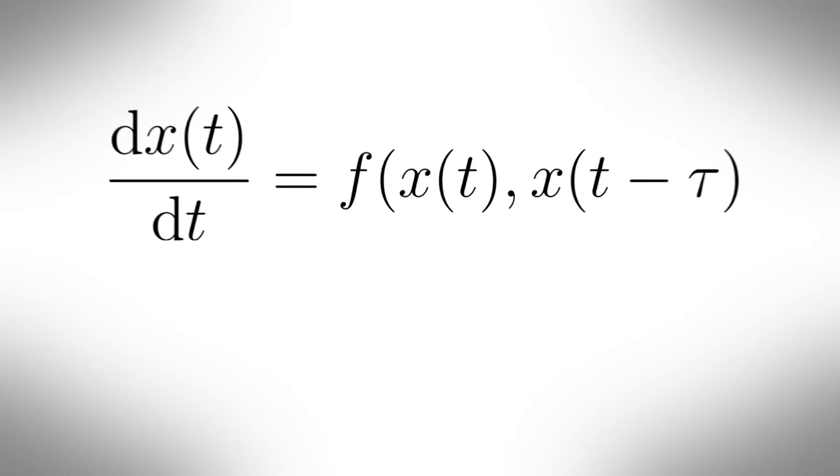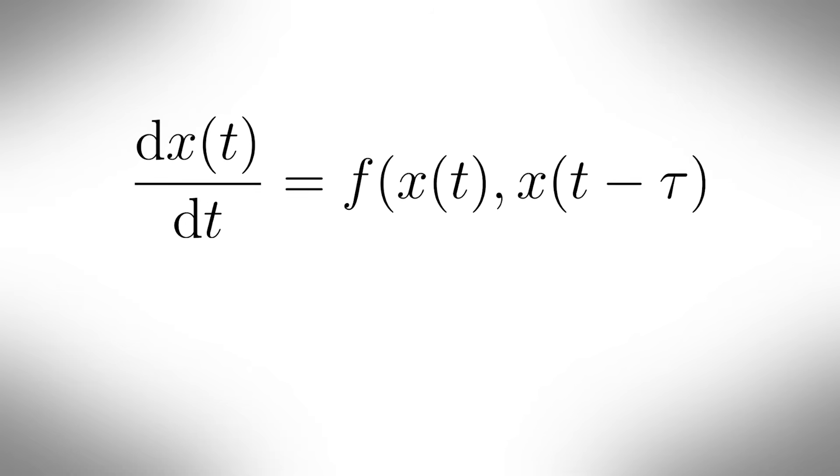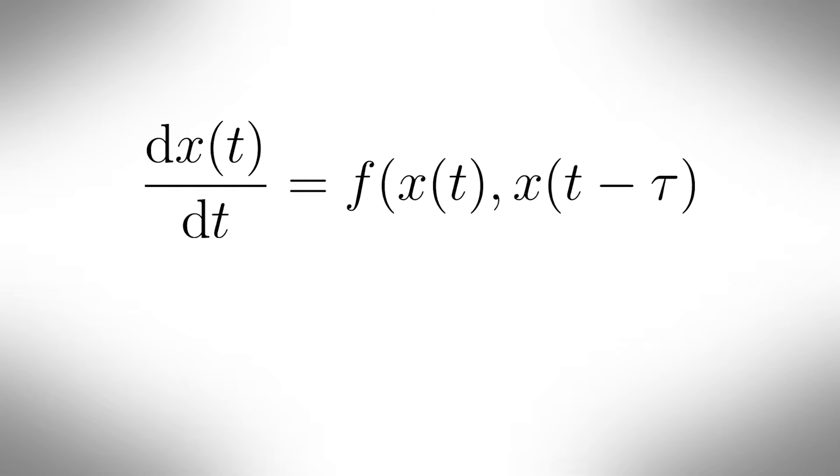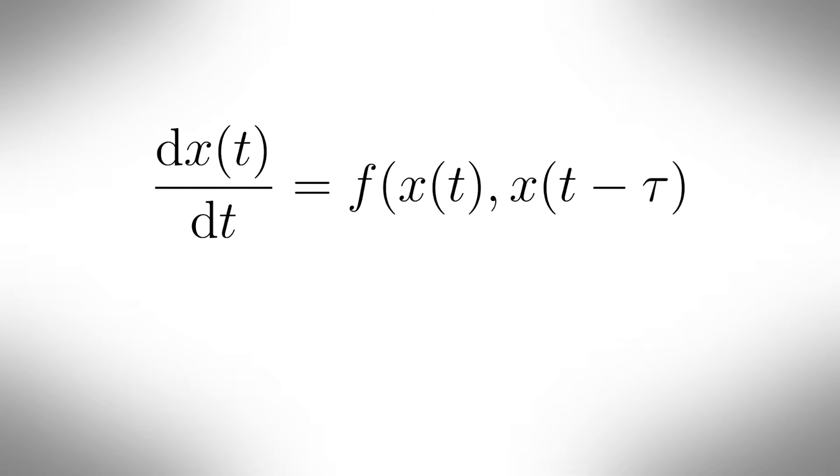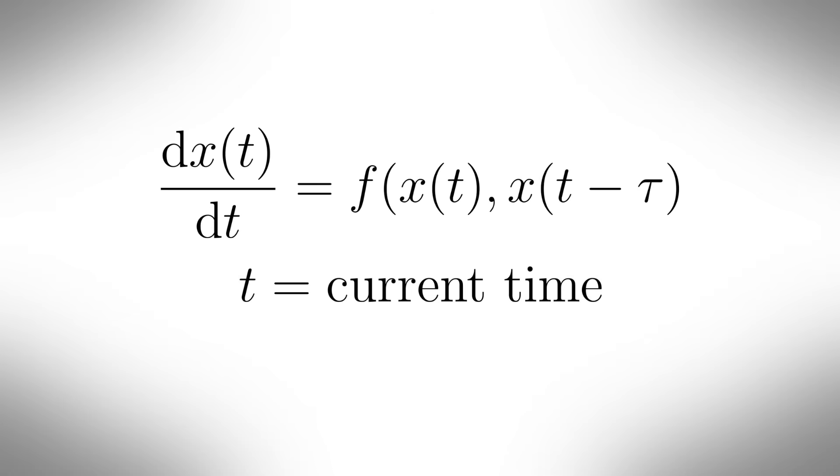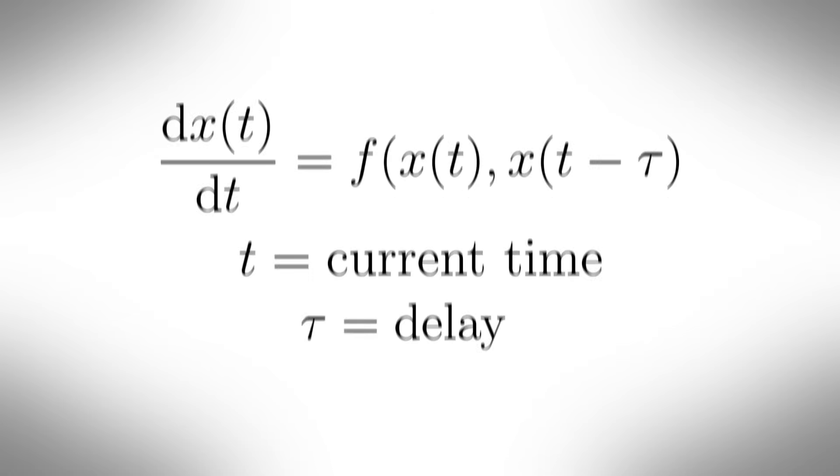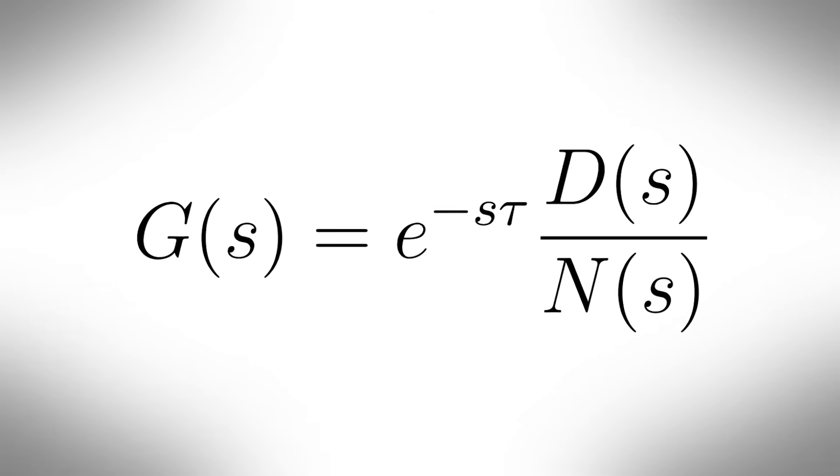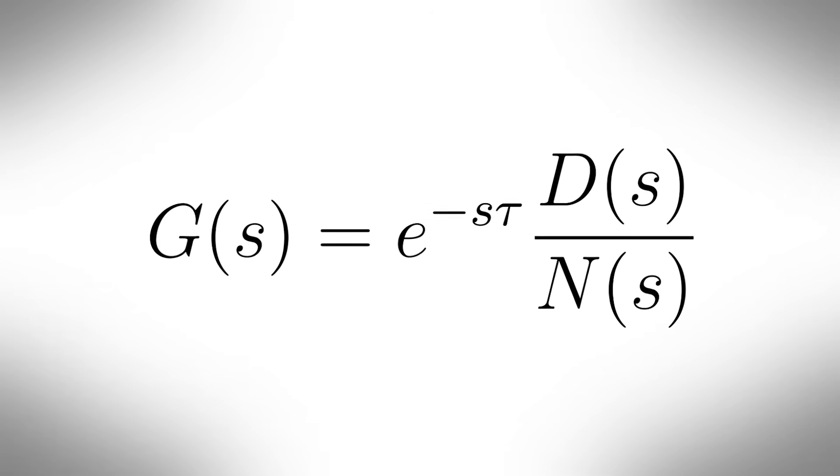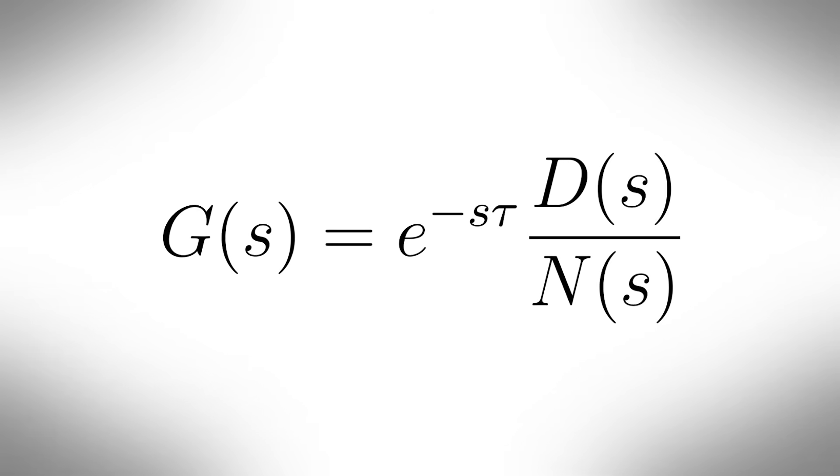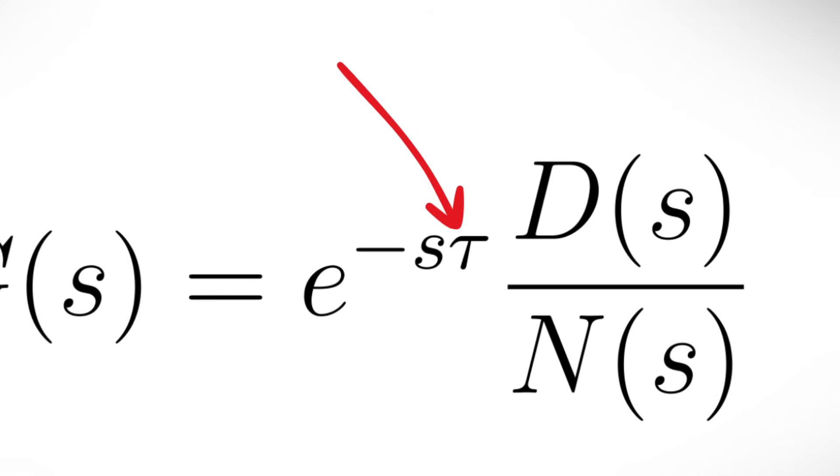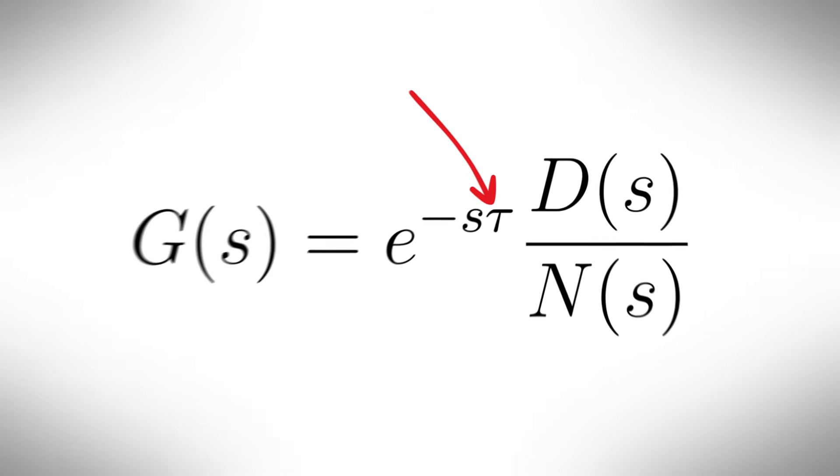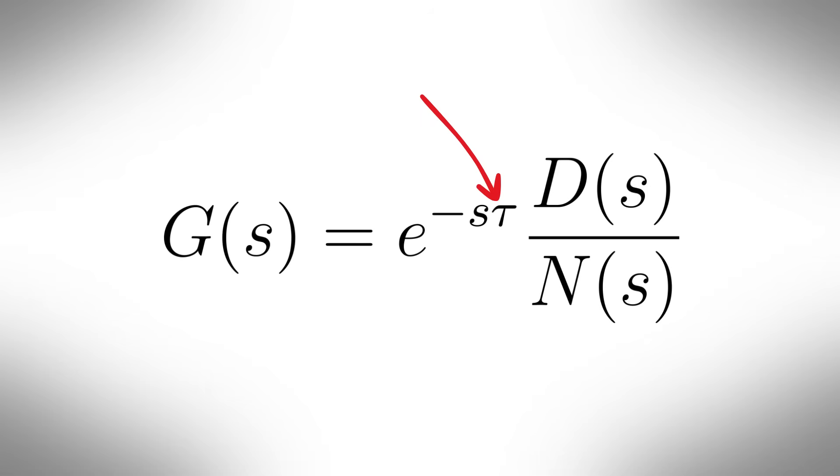Delay refers to the dependence on past values of a function. For example, in a delay differential equation, dx of t over dt equals f of x(t), x(t minus tau), where t is the current time and tau is the delay. In control theory, a system with delay is called a time delay system, or a dead time system. For example, the transfer function g of s equals e to the power minus s tau dx over n of s, where e to the minus s tau represents a pure time delay in Laplace domain.